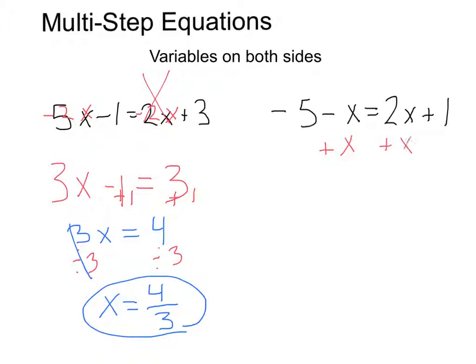So I'm going to add x over here, add x on the right side. Again, you could have gone the other way around, but this is just the direction I chose to go. These x's are going to cancel. Now I've got my 2x plus x. That gives me 3x plus 1 on the right, and I'm left with this negative 5 on the left.